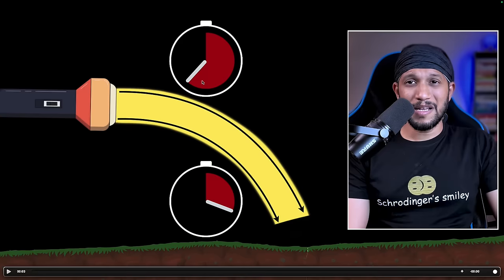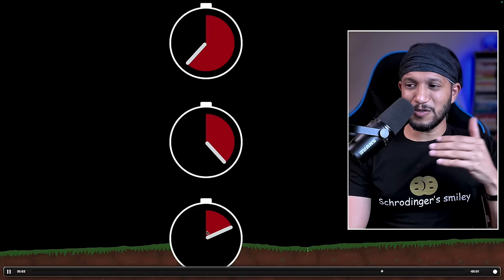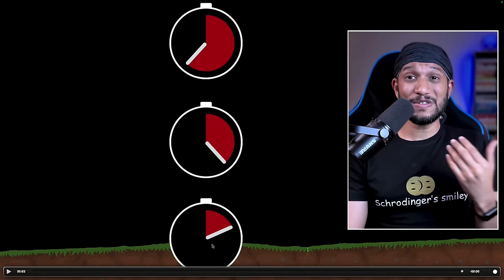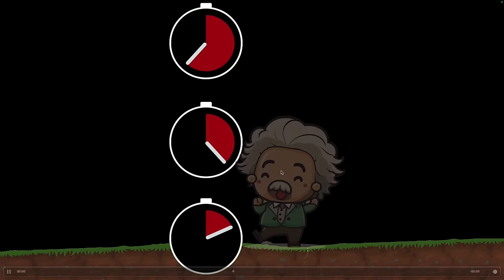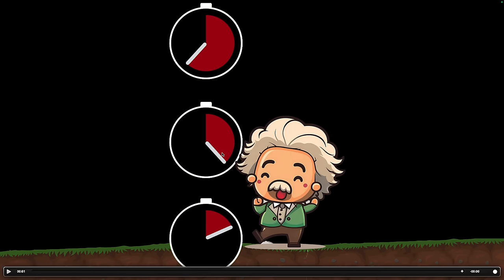But let's think about what this means. This means that clocks at different heights should run at different rates. Clocks which are higher should run faster, and the clocks which are closer to the ground should run slower. So we have time dilation, a different kind of time dilation. This is called gravitational time dilation. And what's interesting about this is that since your head is slightly farther away from the ground compared to your feet, your head ages faster than your feet.